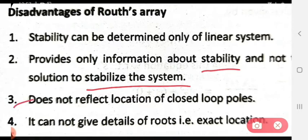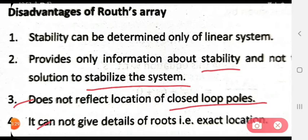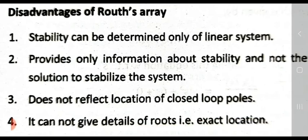The third disadvantage is that it does not reflect the location of closed-loop poles — whatever closed-loop poles exist, their location is not reflected. The fourth disadvantage is that it cannot give details of the roots; the exact location of the roots cannot be determined from Routh's array.